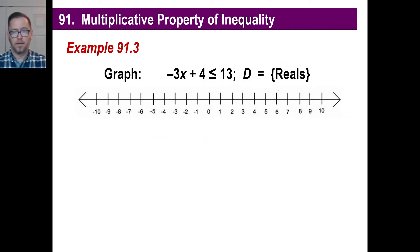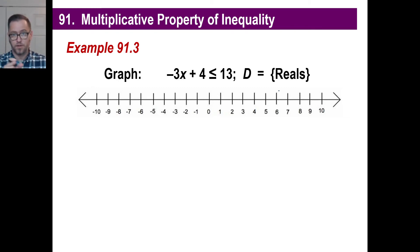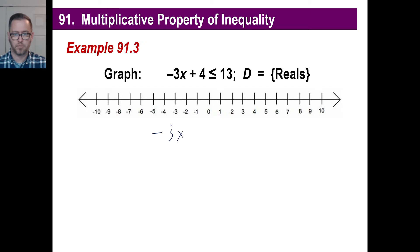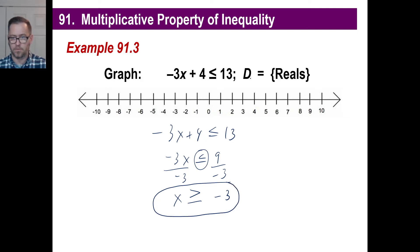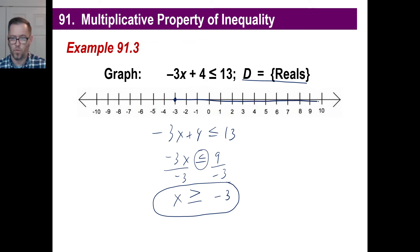Here's another one - pause it and solve it before I do. Treat it just like an equation. Negative 3x plus 4 is less than or equal to 13. Moving the 4 over, we get negative 3x less than or equal to 9. Dividing by negative 3 and flipping the sign gives us x greater than or equal to negative 3. Since we're allowed to use all real numbers, we draw a filled-in dot at negative 3 and shade all the way to the right.